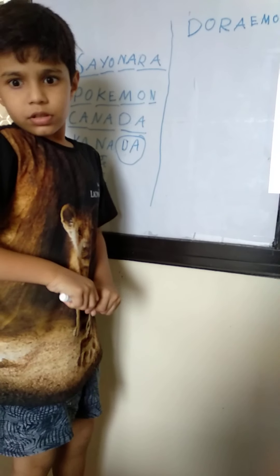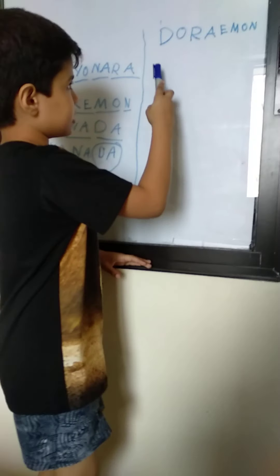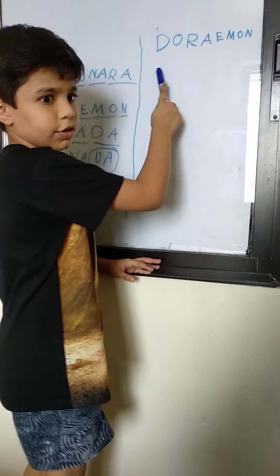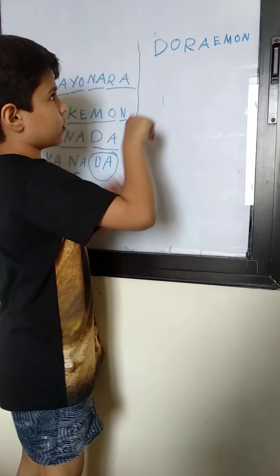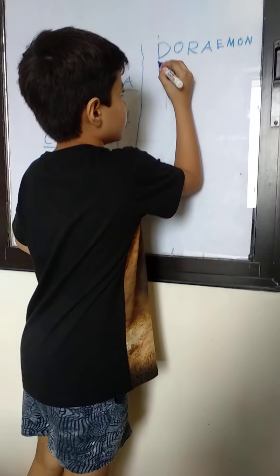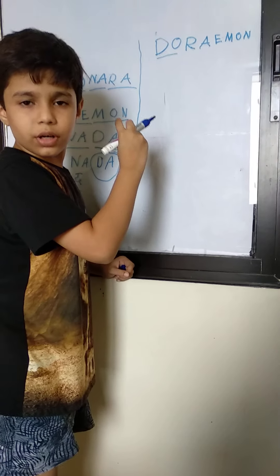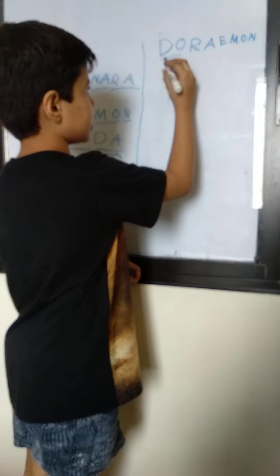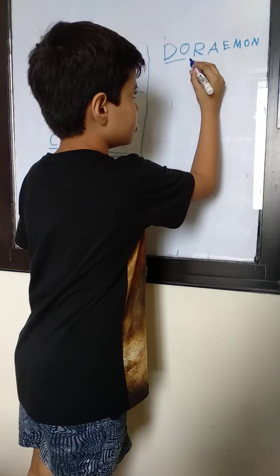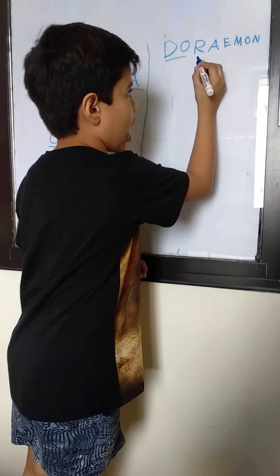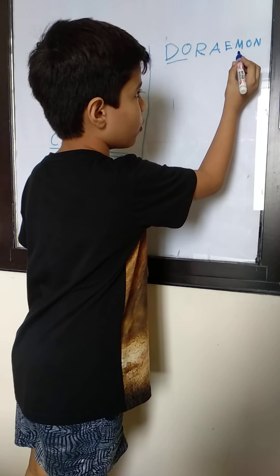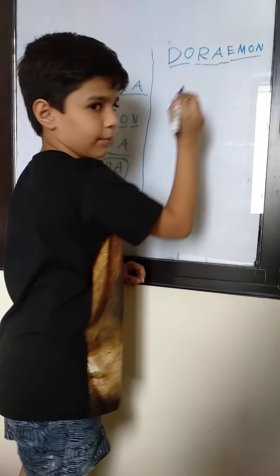Another example is Doraemon. Hame isse Doraemon nahi bole. Hame isse bole: Do, ra, e, mo, n — Doraemon.